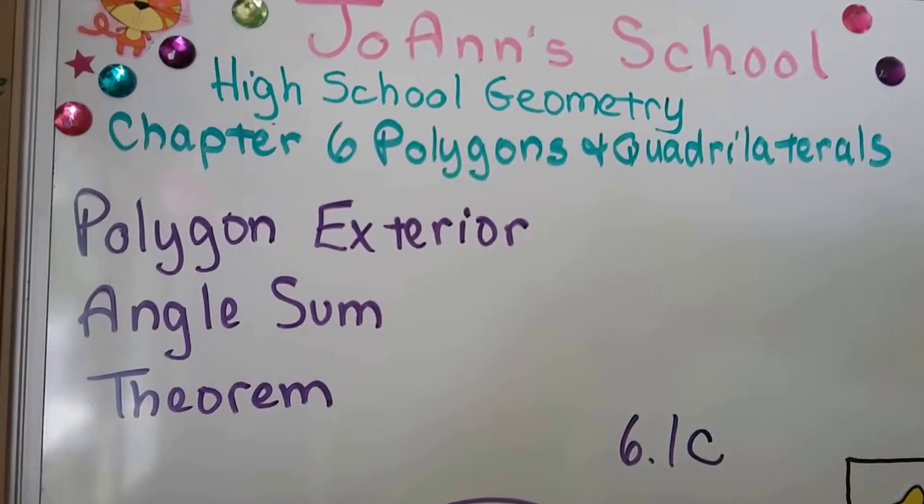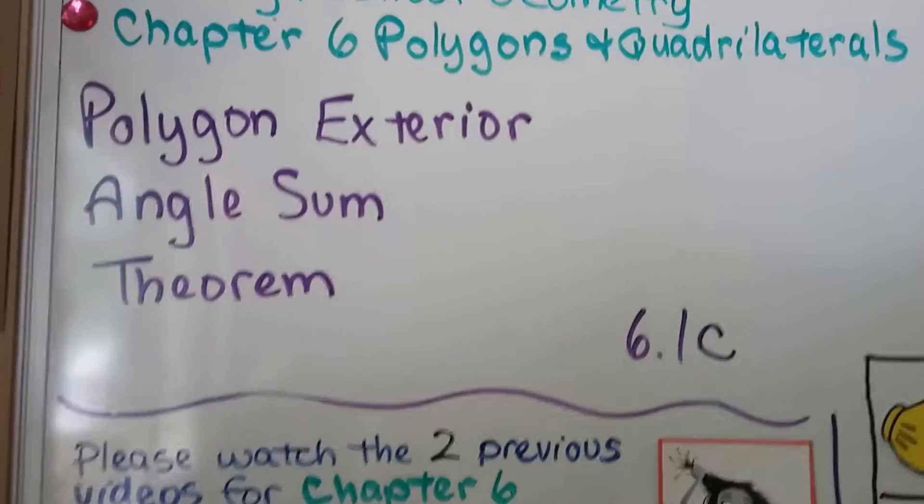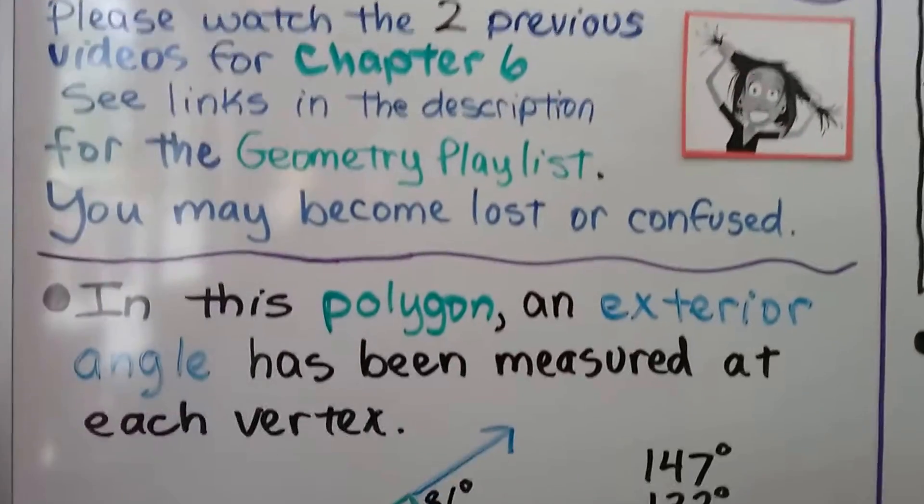Polygon exterior angle theorem. We're at 6.1c with two previous videos for Chapter 6 that you can find in the geometry playlist.